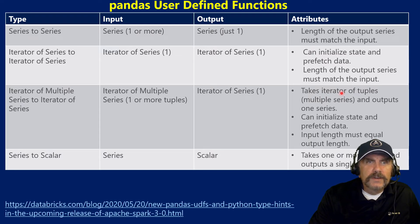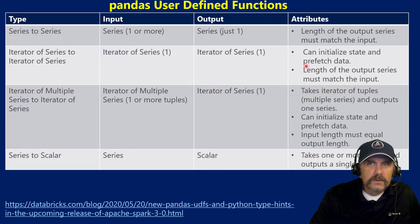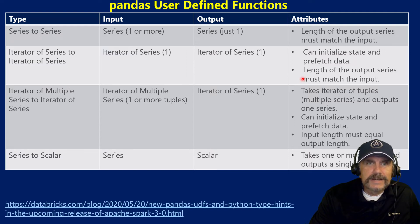Because you have to set up and initialize the iterator, you have some space in which you can initialize the state of the function — for example, getting a broadcast variable to use. It also provides some performance optimizations by being able to prefetch data. The length of the output series and input series must still match. Unlike series to series, an iterator of series to iterator of series can only take in a single iterator of series.